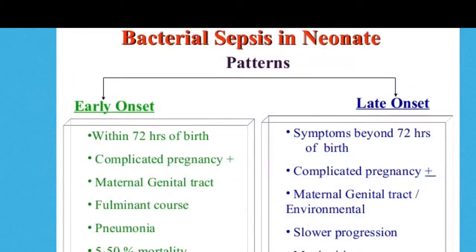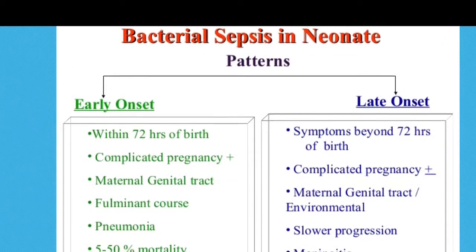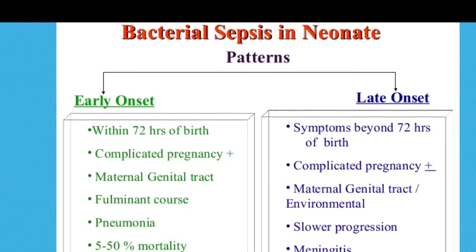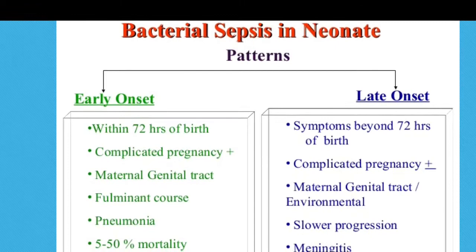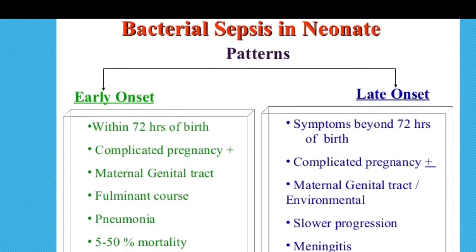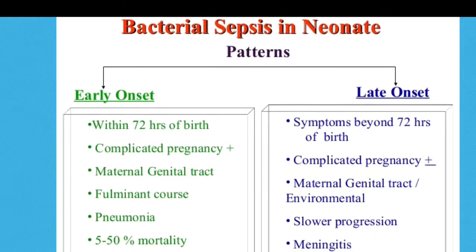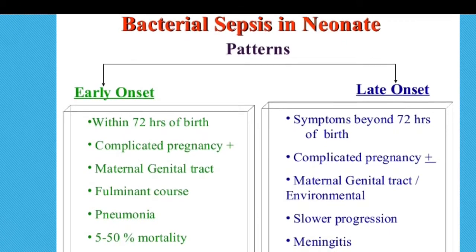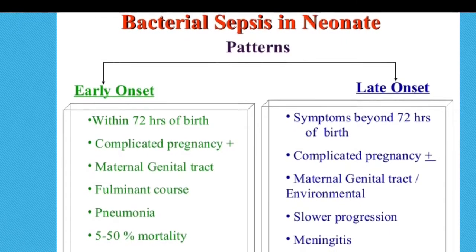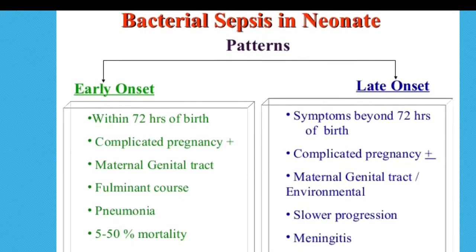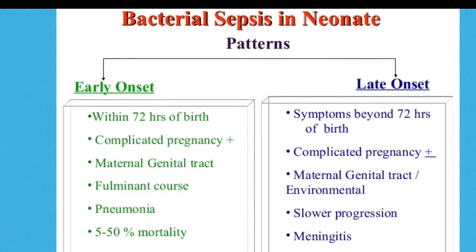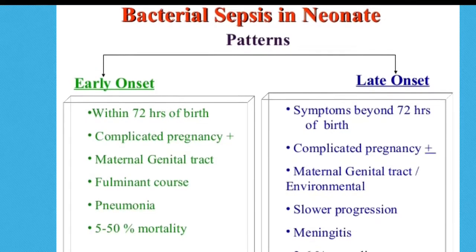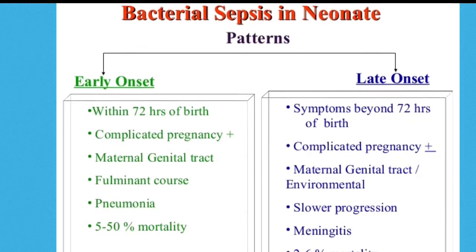Neonatal sepsis can present itself in two forms: early onset and late onset. With early onset, some literature will tell you it presents within 48 hours of delivery, and other literature will say 72 hours — it depends on which literature you're using. Early onset usually has a fulminant course and a five to fifty percent mortality rate.